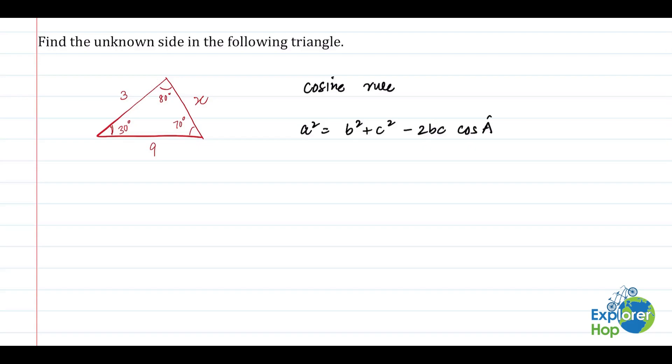So the very first thing that we need to do is we need to identify what a, b, c are in our triangle. So in this case, we can set x to be a, so a equals x.